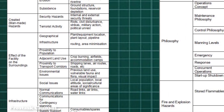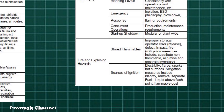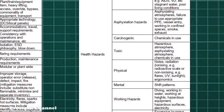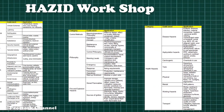Additional guideword categories include Facility Hazards such as Material Characteristics, Sources of Ignition, Reaction, Equipment Hazard, Fire, and Explosion; as well as Health Hazards such as Toxic, Carcinogenic, and Disease.